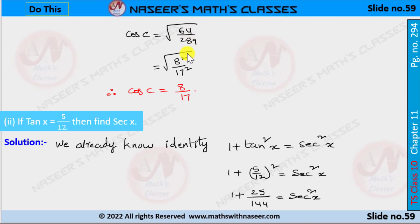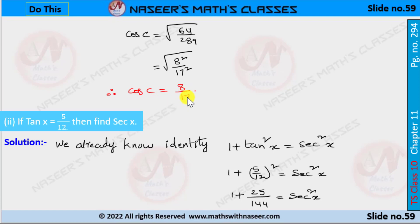Now cos c is written as the square root of 64 by 289. 64 is written as 8 square and 289 is written as 17 square. After removing the square root, it can be written as 8 by 17. Therefore cos c is equal to 8 by 17.